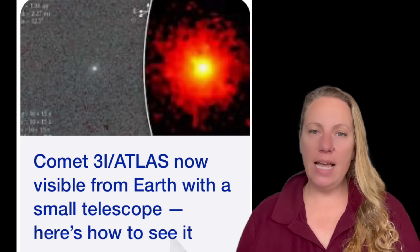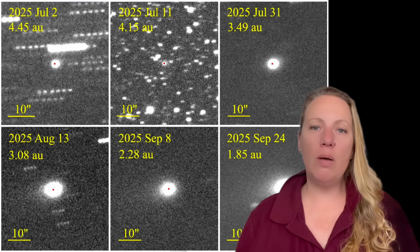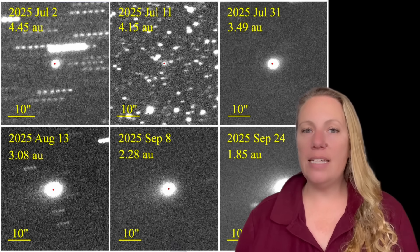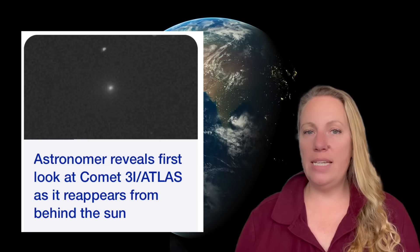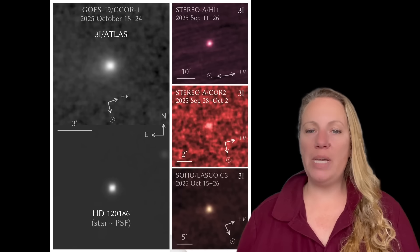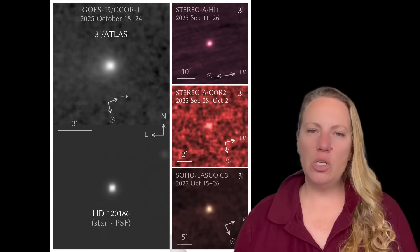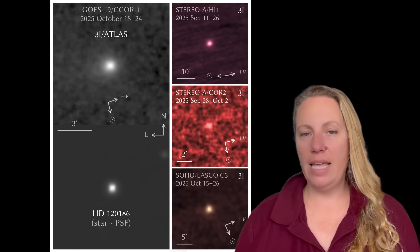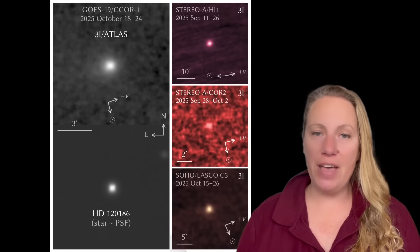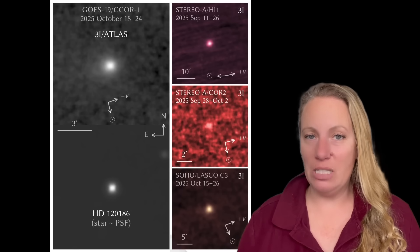That means it can tell us about planetary formation, chemical composition, and the environments present in other solar systems - stuff that we couldn't get any other way right now with our current technologies. And if we detect odd behaviors, anomalies, unusual composition, unexpected trajectories, this is a chance to test whether interstellar objects could behave very unlike our local comets and asteroids. That has big implications for astrophysics, planetary defense. NASA has activated their planetary defense, by the way.